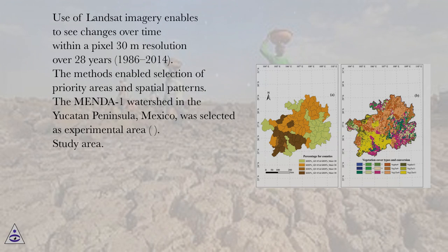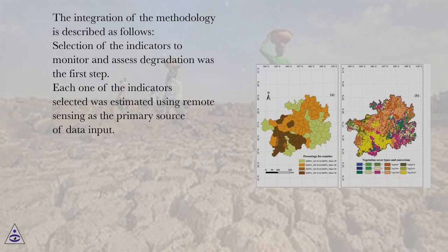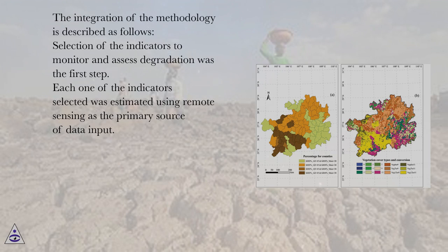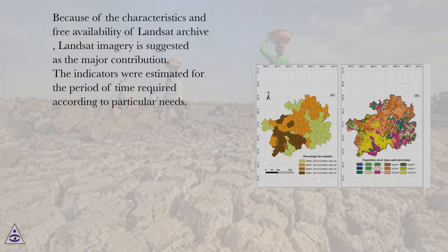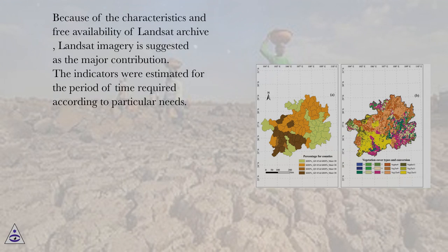The integration of the methodology is described as follows. Selection of the indicators to monitor and assess degradation was the first step. Each one of the indicators selected was estimated using remote sensing as the primary source of data input. Because of the characteristics and free availability of the Landsat Archive, Landsat imagery is suggested as the major contribution. The indicators were estimated for the period of time required according to particular needs.